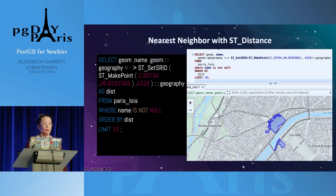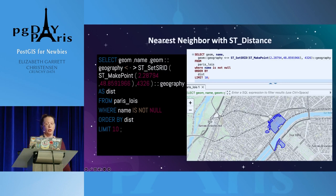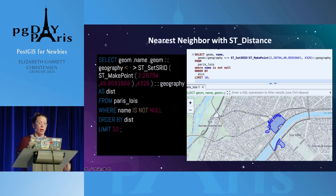Another really popular thing that people do with the ST_Distance function is nearest neighbor queries. So if you want to know what are the other things in the locations of interest table that are nearest to this point, you can ask for something like this.